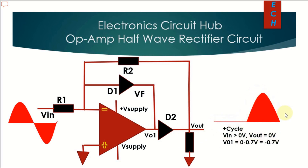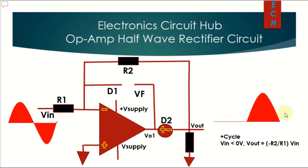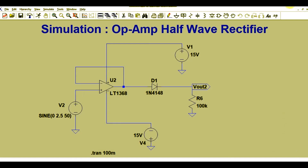For the negative half cycle, diode D1 is in reverse bias and diode D2 conducts. You get an output V-out equals R2 divided by R1 times V-in, where R2/R1 is the gain. In this circuit, the op-amp does not go into negative saturation, so it responds much faster than the previous circuit.